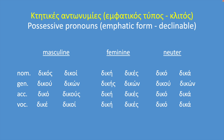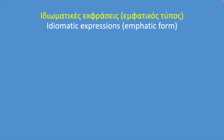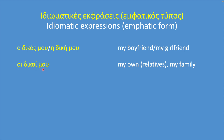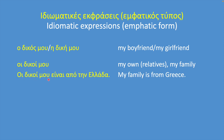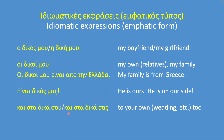This is a table of all three genders declined side by side. Finally, some idiomatic expressions using the emphatic type: ο δικός μου — my boyfriend; η δική μου — my girlfriend; οι δικοί μου (plural) — my own relatives or people, therefore my family. Η δικοί μου είναι από την Ελλάδα — my family is from Greece. Είναι δικός μας — he's ours, he's on our side. Και στα δικά σου / Και στα δικά σας — to your own wedding, too. It's a wish used mostly at weddings but also at other happy occasions.